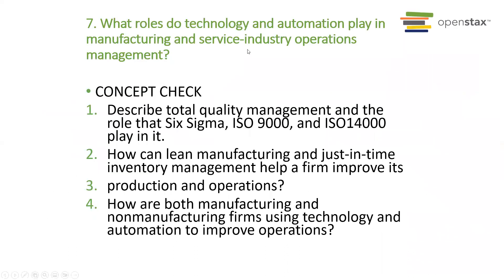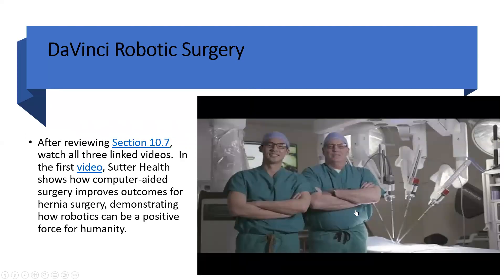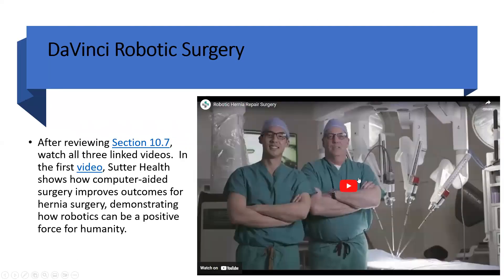Section seven asks: what role do technology and automation play in manufacturing and service industry operations? These are some questions to consider when reviewing section seven in chapter 10. And here's a video about how robotics are used in repair and surgery — let's take a look.